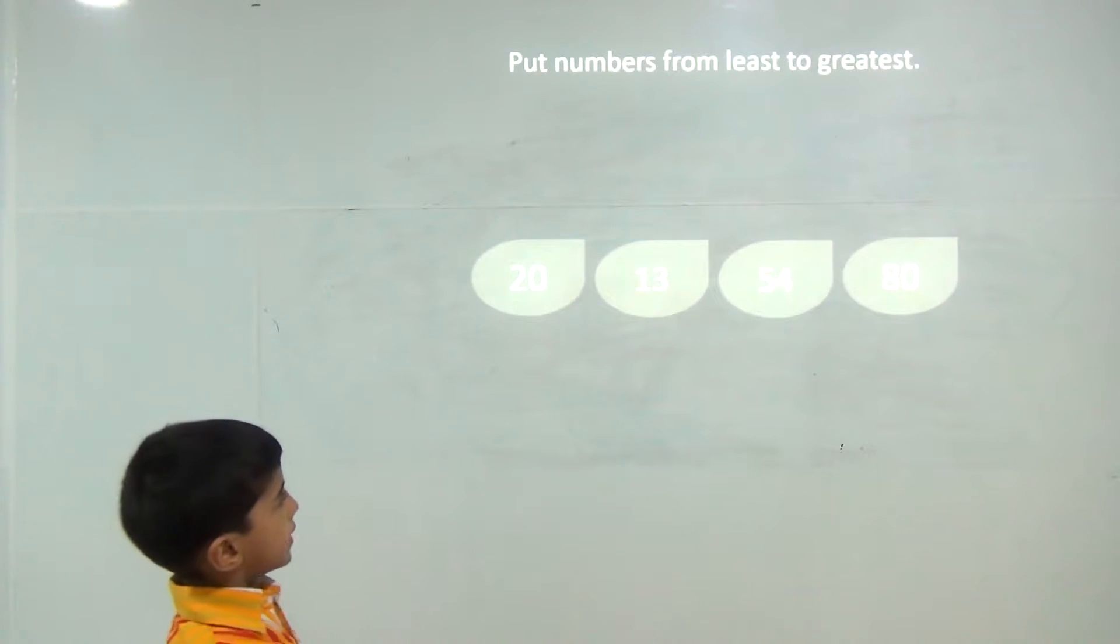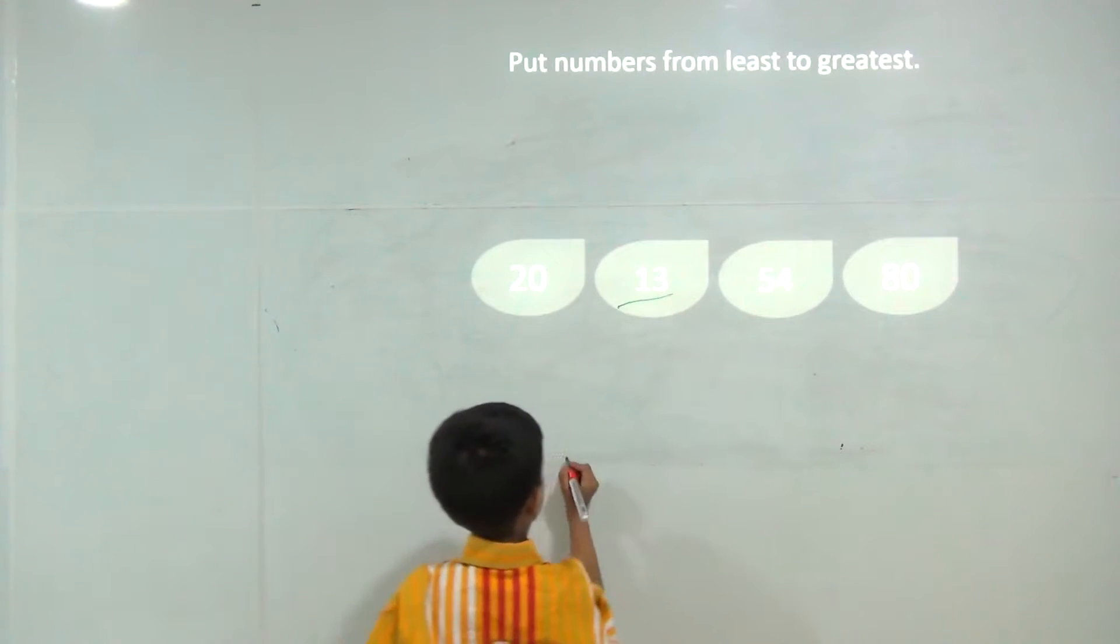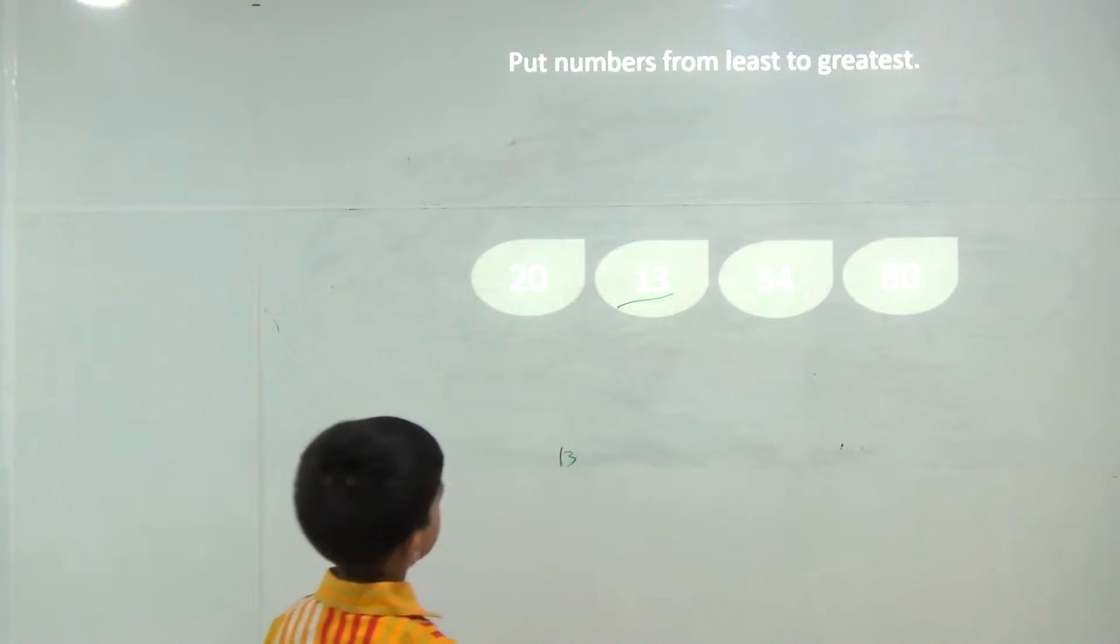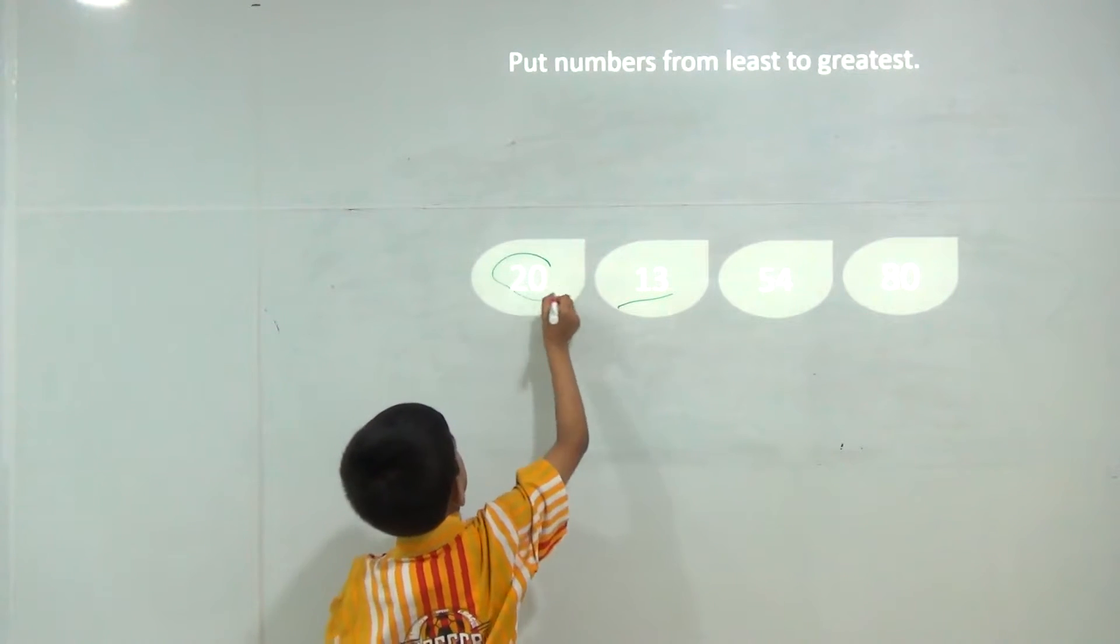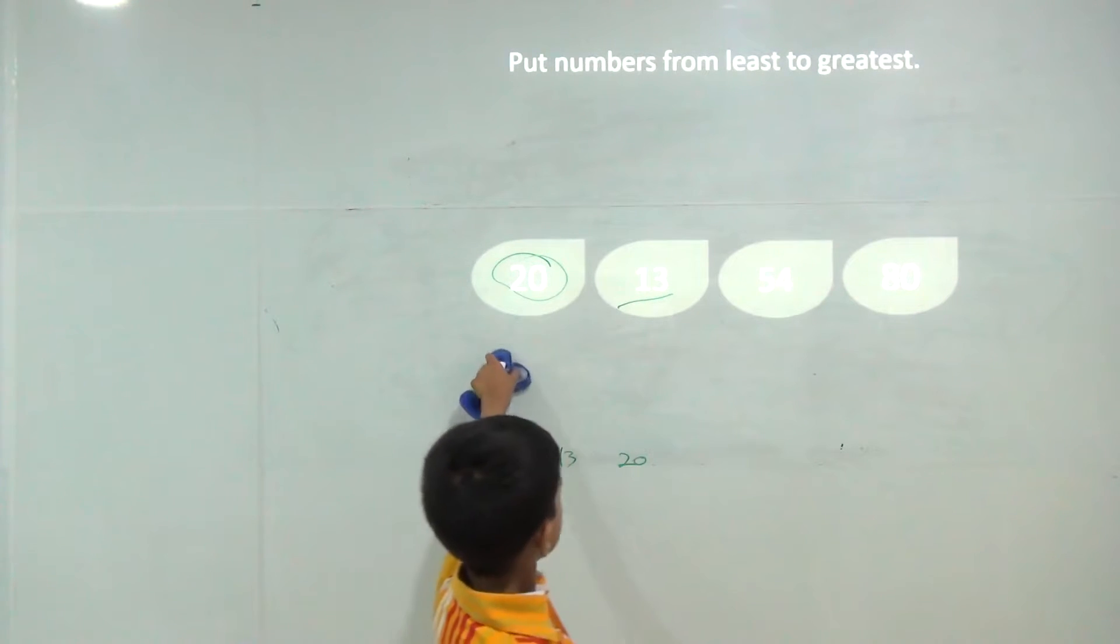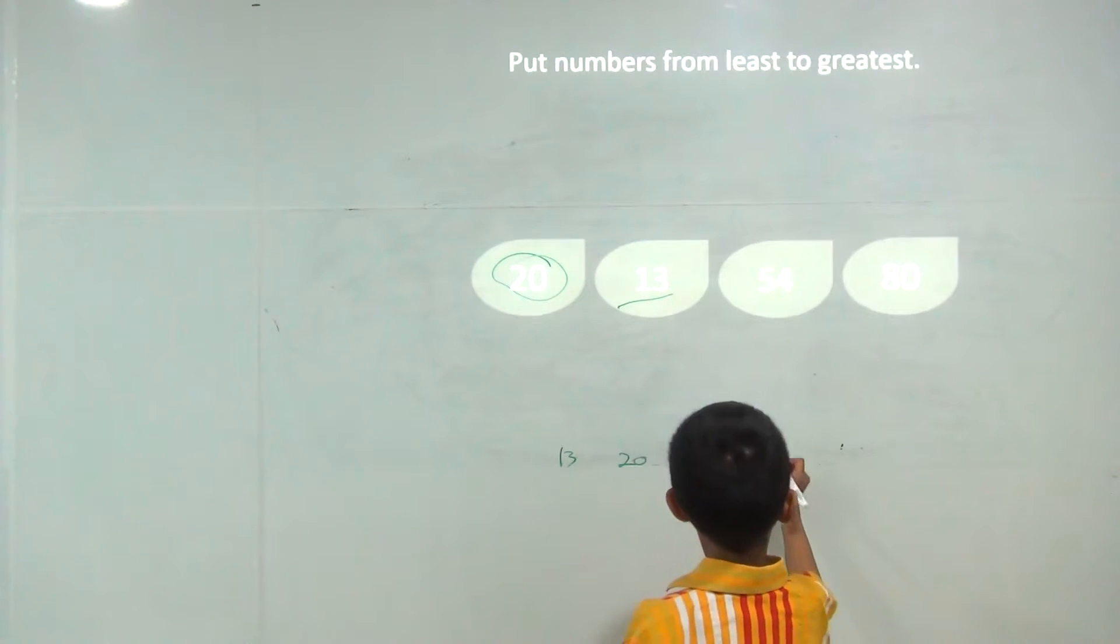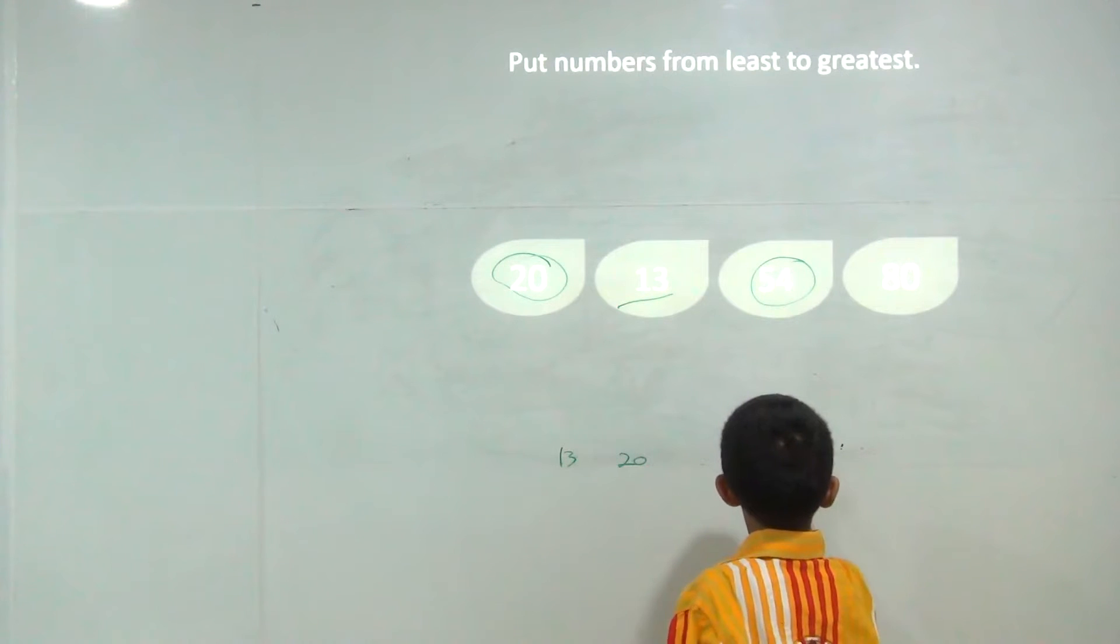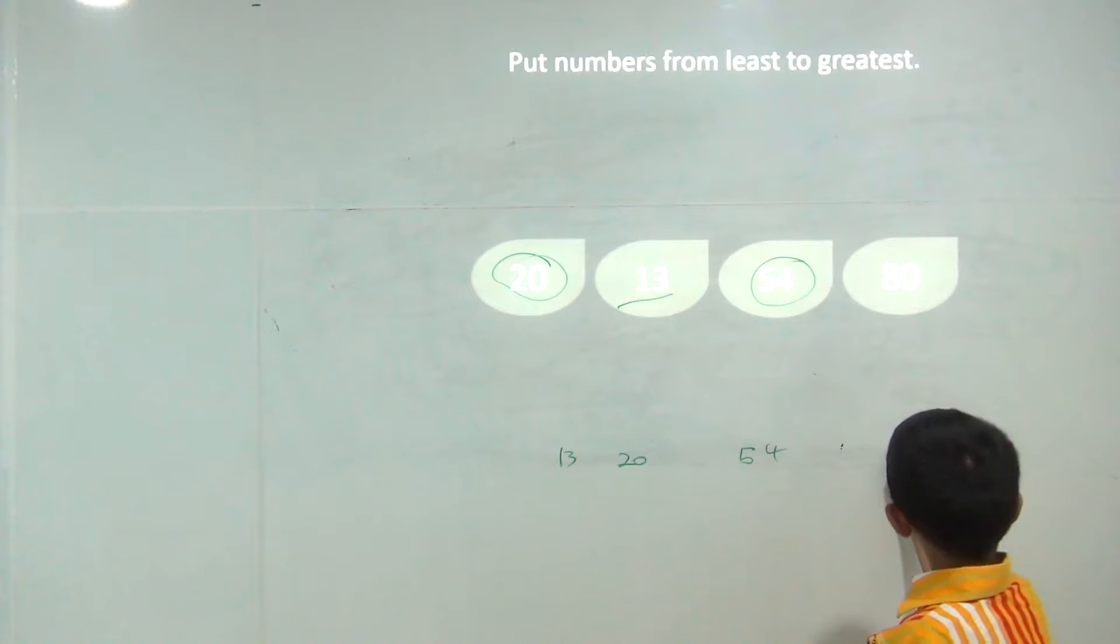The smallest number in this would be 13, and bigger than 13 would be 20, bigger than 20 would be 54, bigger than 54 is 80, because there are no more options.